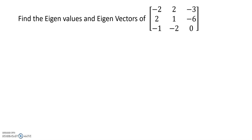In this problem, the eigenvalues are repeated. The previous problem had non-repeated, distinct eigenvalues. So here we have repeated eigenvalues, and we will find the eigenvectors individually.